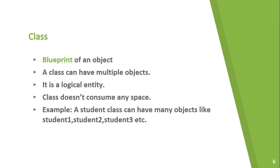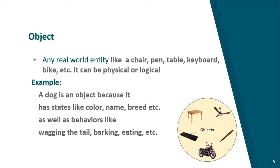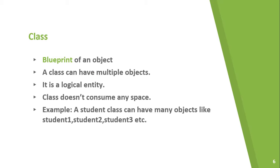Now, let's talk about class. Basically, class is a blueprint of an object. A class can have multiple objects — one class can have multiple objects. For example, you can pick up a lab and all four chairs are objects in the lab. Class is a logical entity, whereas an object is both logical and physical. Class doesn't consume any space.